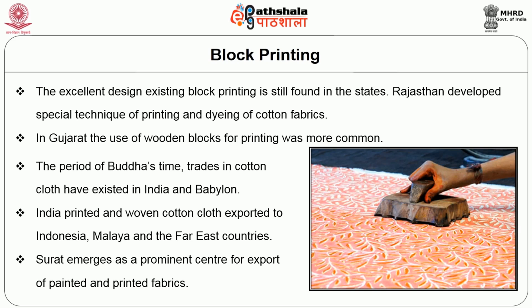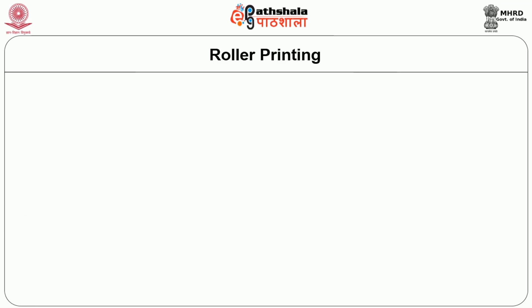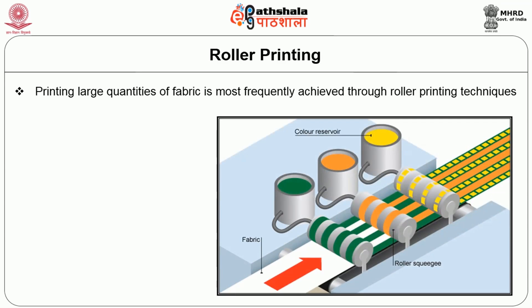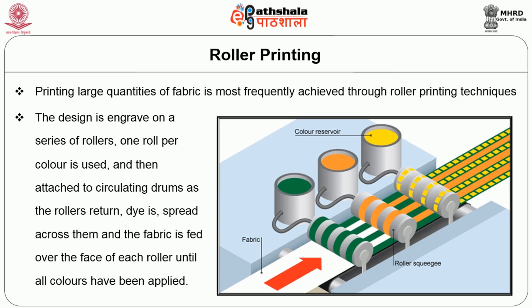Roller printing is most frequently used to achieve large quantities of printed fabric. The design is engraved on a series of rollers — one roller per color — attached to circulating drums. As the rollers rotate, dye is spread across them and fabric is fed over the face of each roller until all colors have been applied.